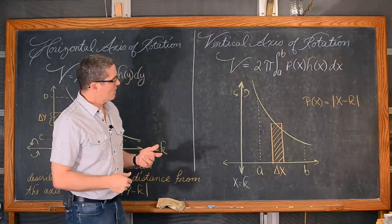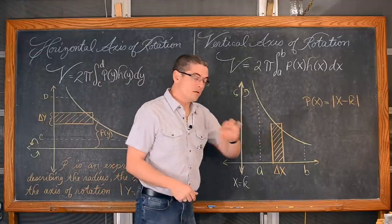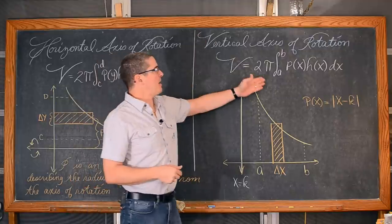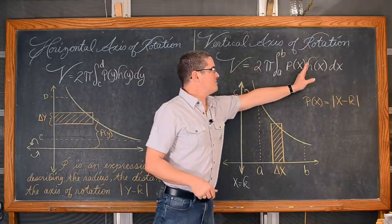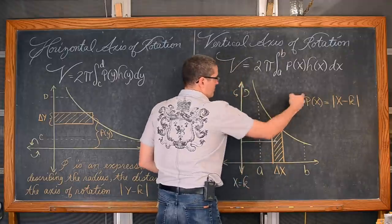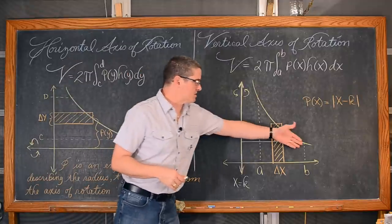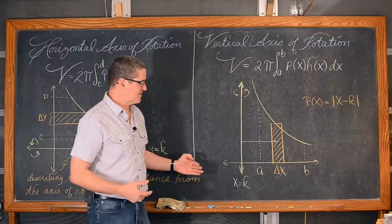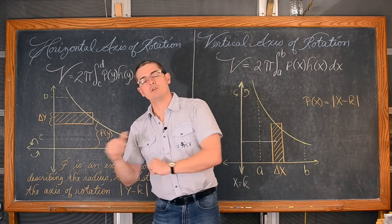If you have a vertical axis of rotation, then you have a vertical representative rectangle, which means that we are going to integrate with respect to x, so our functions given as y in terms of x will work perfectly. The volume is 2π times the definite integral from a to b of p(x) times h(x) dx. That expression p describing the radius will be in terms of x — the absolute value of x minus k. If your plane region is on the right it is x minus k, and if on the left you may want to do k minus x. Each of these examples will compare the disk method to the shell method.